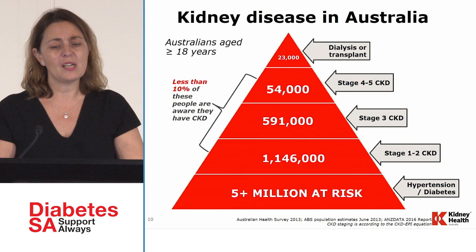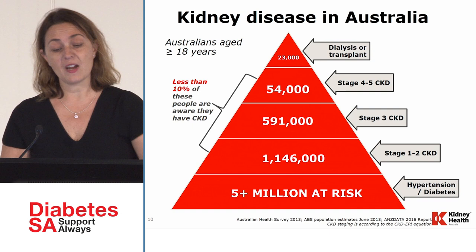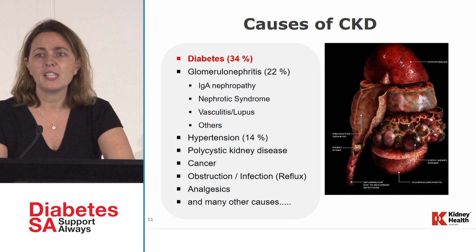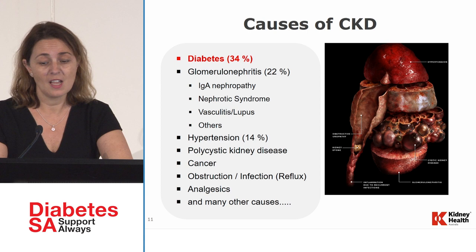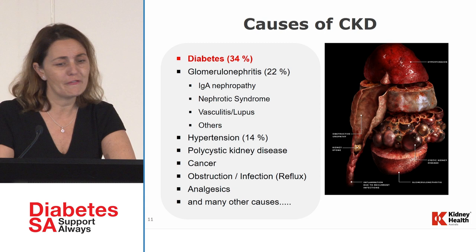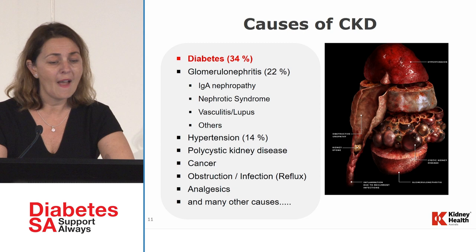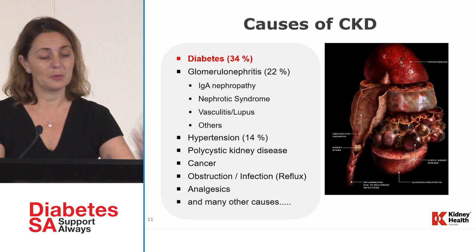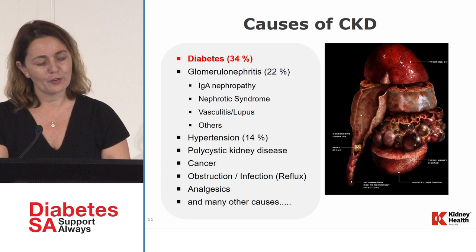The causes of CKD: number one is diabetes, accounting for 34% of cases in Australia. Other causes include glomerulonephritis, IgA nephropathy, nephrotic syndrome, vasculitis, hypertension, polycystic kidney disease, cancer, obstruction, reflux, chronic infections, and analgesics. But diabetes is definitely the number one cause of chronic kidney disease.